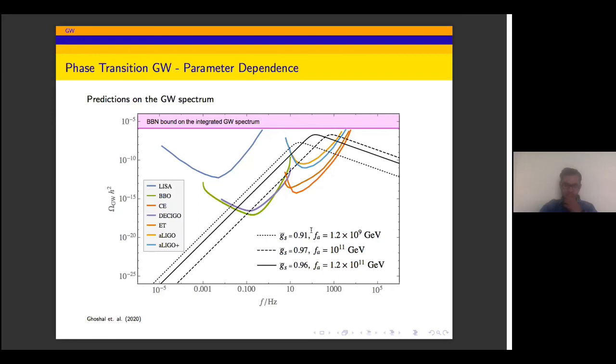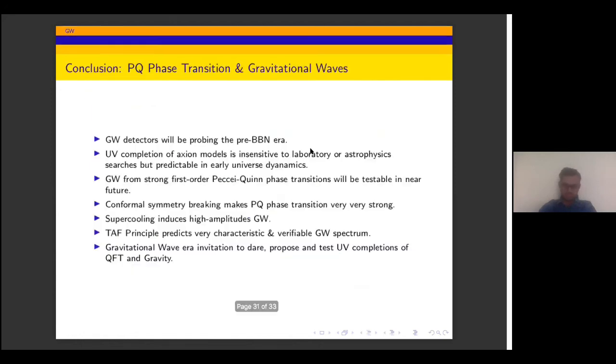Just to conclude, this is the central plot. You can see with these predictions, you will going to have the Total Asymptotic Freedom condition. Your theory is valid to infinite energy and you will get the prediction of the gravitational wave in this region. These are the interferometer-based detectors. And I conclude with this slide: gravitational wave activity probing the BBN era. UV completion axion model is insensitive to laboratory or astrophysics, but it will be predictable in early universe dynamics after a strong phase transition. So the Peccei-Quinn phase transition will be testable in the future. Conformal symmetry breaking helps to make the phase transition very strong. Basically I didn't get time to discuss, but this is basically supercooling and this supercooling induces high amplitude. TAF principle predicts very characteristic and detectable gravitational waves. And gravitational wave era is an invitation to propose and test UV completion models of quantum field theory and gravity. Thank you.